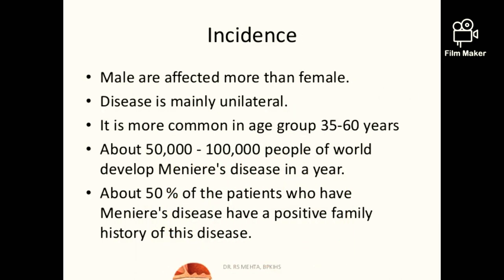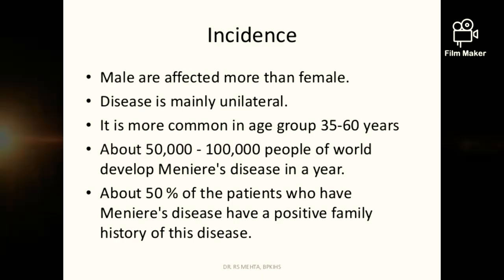What are the incidence of Meniere's disease? Males are affected more than females. The disease is mainly unilateral, meaning it usually affects one ear. It is more common in the age group between 35 to 60 years. About 50,000 to 1 lakh people worldwide develop Meniere's disease in a year. About 50% of patients with Meniere's disease have a positive family history. Basically, this is an autoimmune disease.